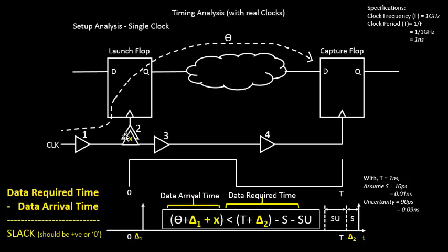Let us take a case where we added one buffer in the launch clock path delay with a delay of X. So the left hand side of the equation becomes theta plus delta 1 plus X.